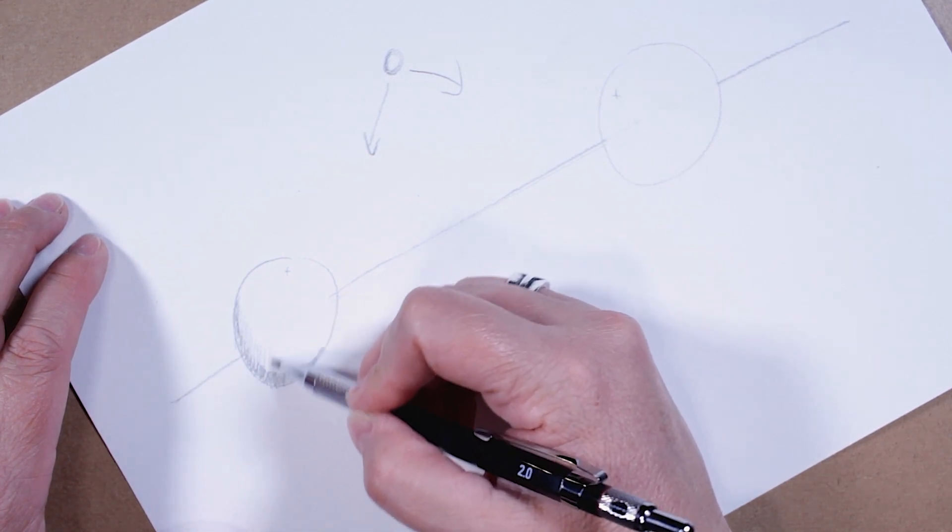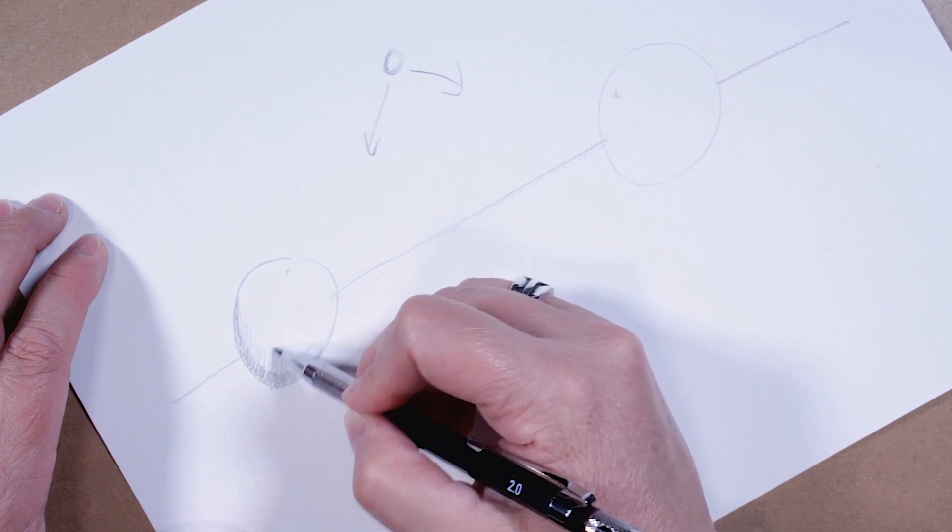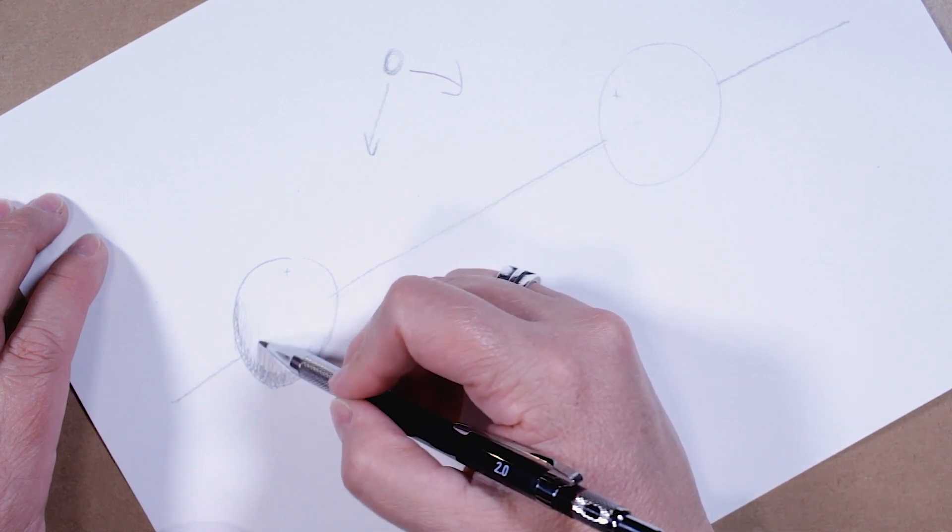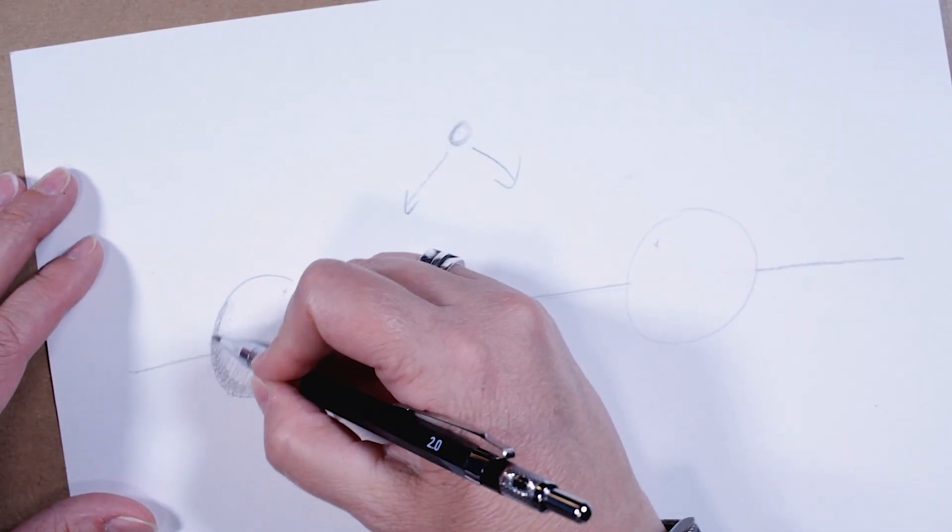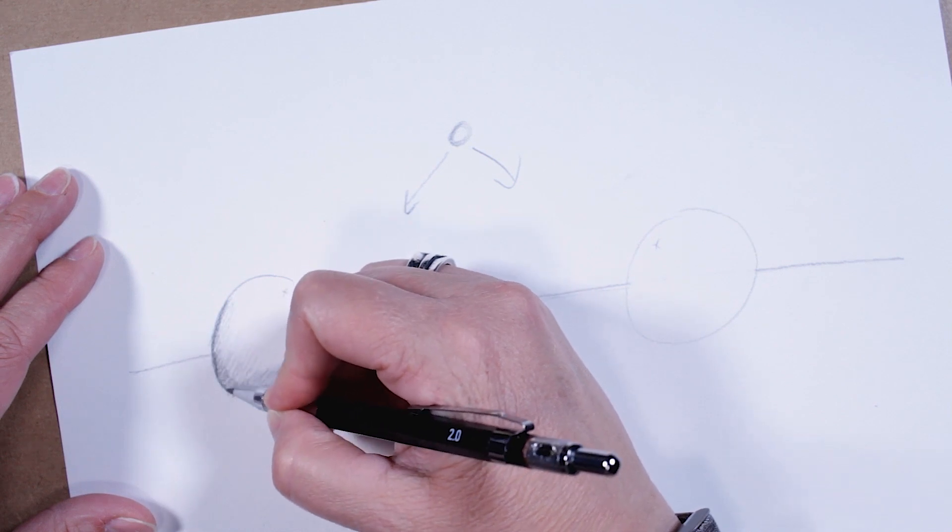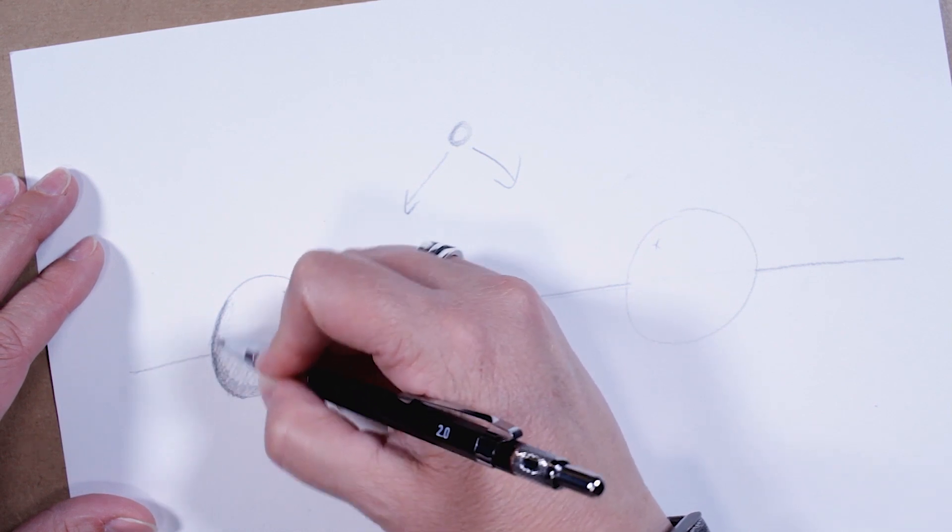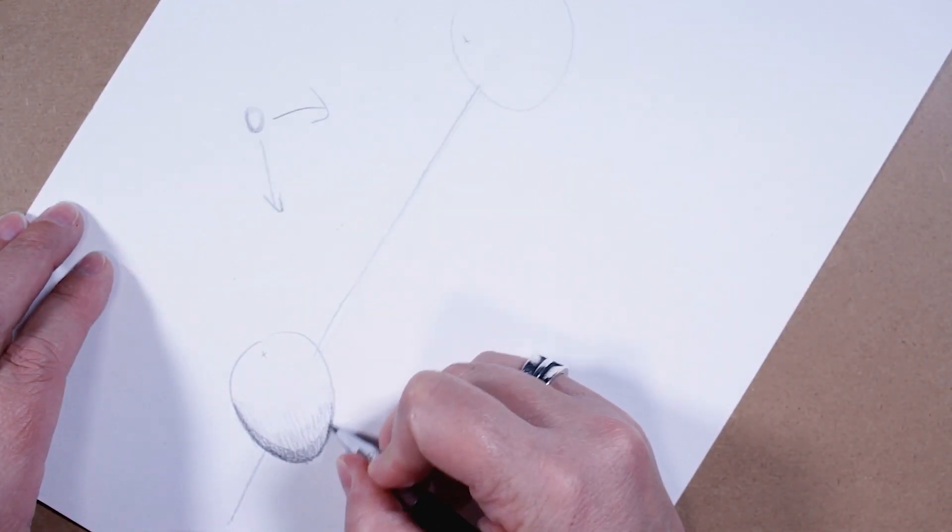So just lightly start blocking in your shadows, and then we'll just keep on adding to it and adding to it until we get it the way we think it should be. And you'll see that I'm kind of adding a little more shading to the side here to really define that shadow coming down on the outside of the sphere.